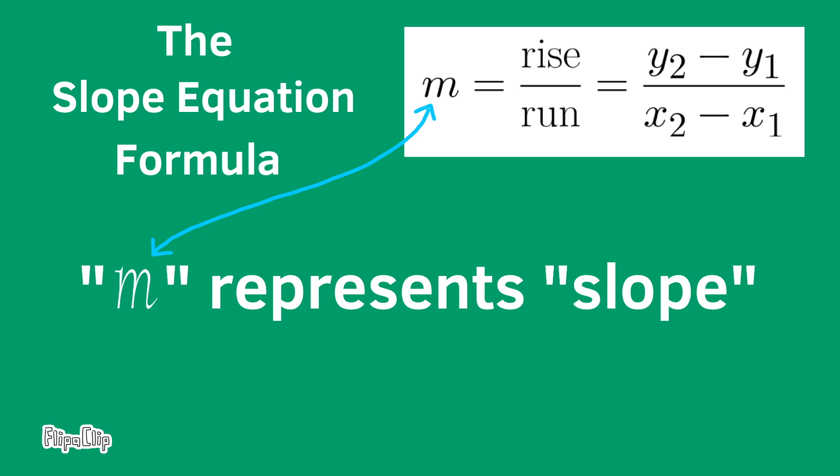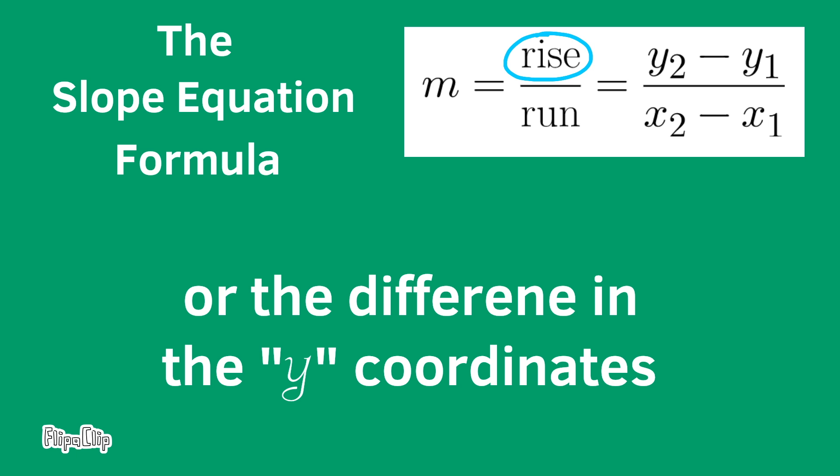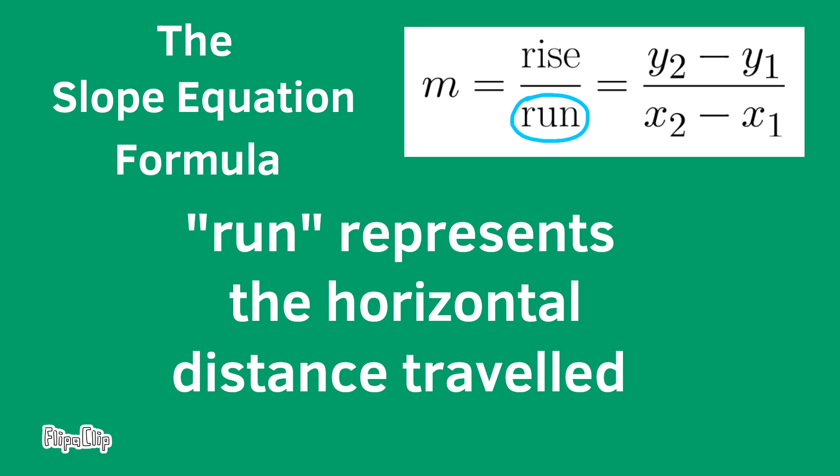m represents slope. Rise represents the vertical distance traveled, or the difference in the y coordinates. Run represents the horizontal distance traveled, or the difference in the x coordinates.